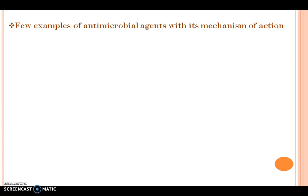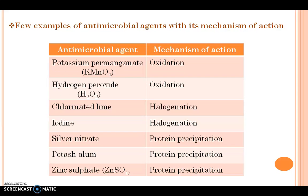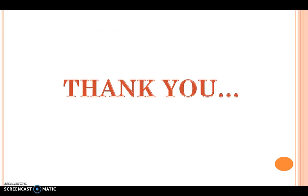Here are a few examples of antimicrobial agents with their mechanism of action. Potassium permanganate and hydrogen peroxide produce their antimicrobial action by the oxidation mechanism. Chlorinated lime and iodine produce their antimicrobial action by the halogenation mechanism. Silver nitrate, potash alum, and zinc sulfate produce their antimicrobial action by the protein precipitation mechanism. So here we discussed the definition as well as mechanism of action of antimicrobial agents with examples.